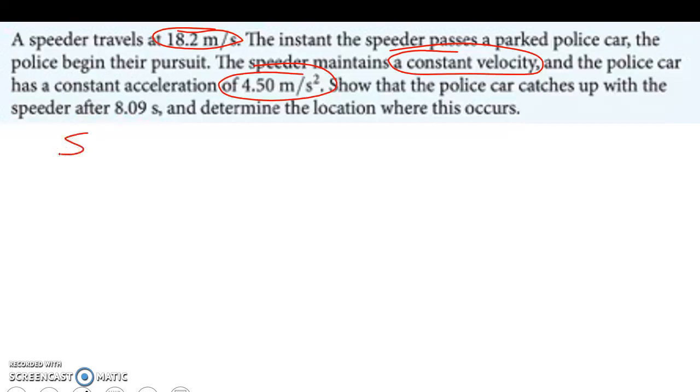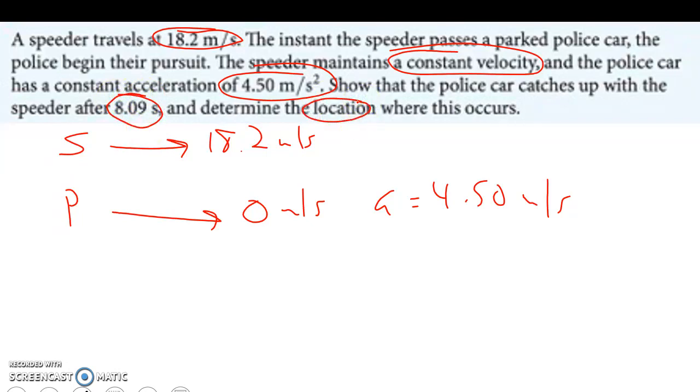So, we got the speeder traveling 18.2 meters per second, constant, no acceleration. The police car begins the pursuit, starting at 0 meters per second and speeds up with an acceleration of 4.50 meters per second squared. We want to show that after 8.09 seconds they meet up and find the location. Let's take a look at the speeder first.